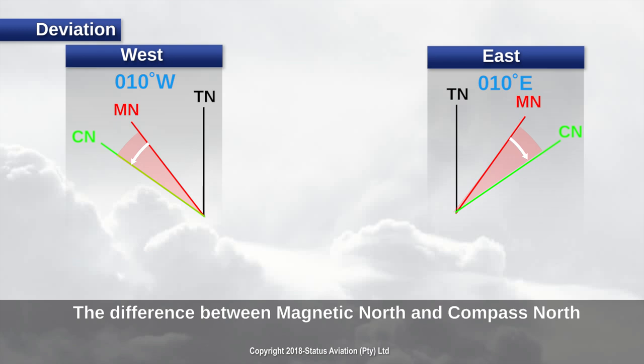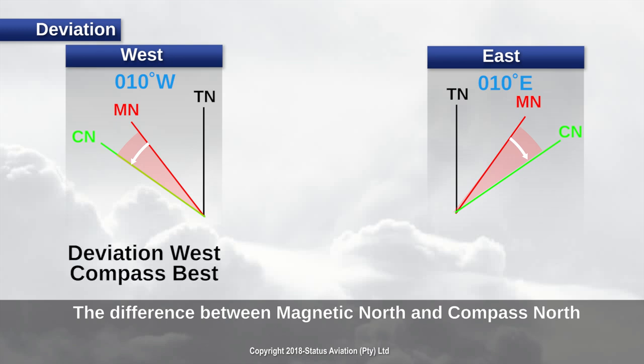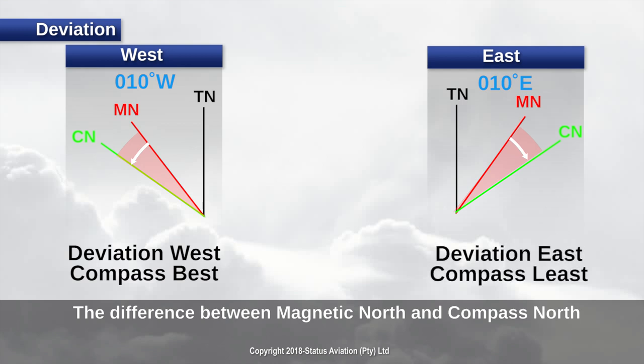Direction is indicated with a suffix W for west and E for east. For deviation direction, we can use a memory aid which goes as follows: deviation west, compass best; deviation east, compass least. This simply means that if the compass direction is larger than the magnetic heading, then deviation is west. And if the compass direction is smaller than the magnetic heading, then deviation is east.